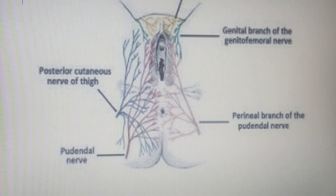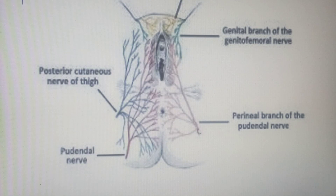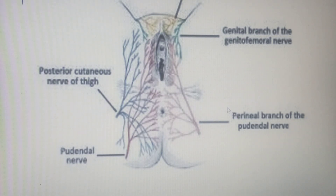Regarding nerve supply, we divide the vulva with an imaginary line into anterior and posterior halves. For the posterior aspect, the posterior cutaneous nerve of the thigh gives branches to supply it, as well as perineal branches from the pudendal nerve. For the anterior aspect, the ilioinguinal nerve and the genital branch of the genitofemoral nerve supply it. The pudendal nerve has root values S2 to S4.